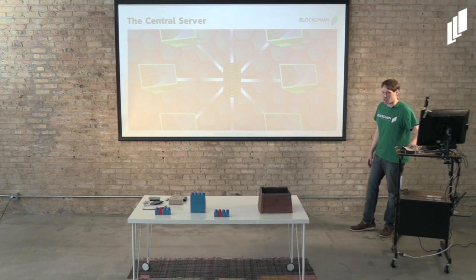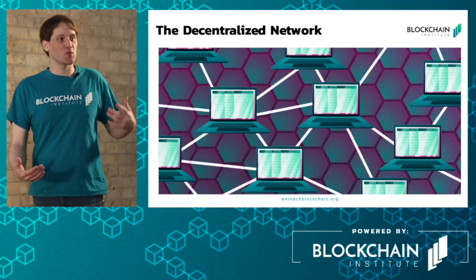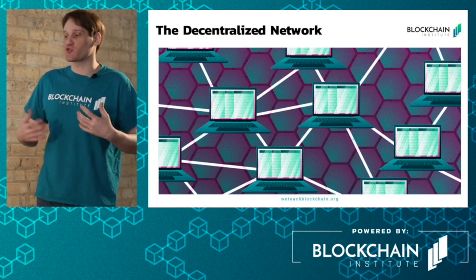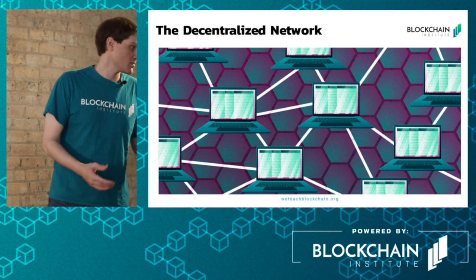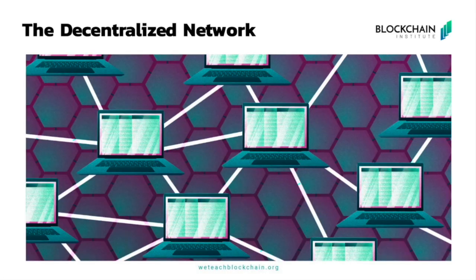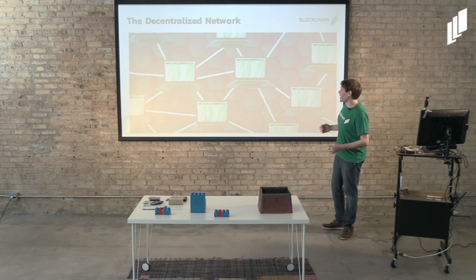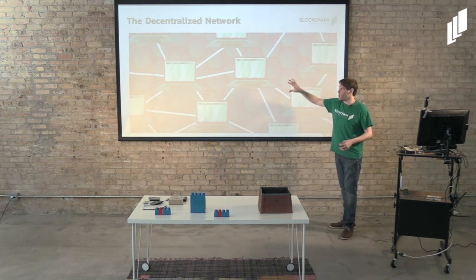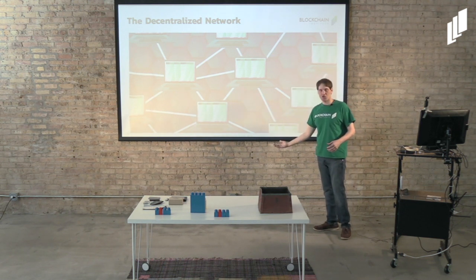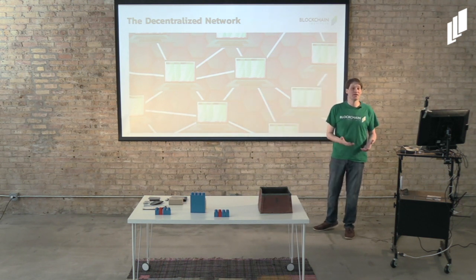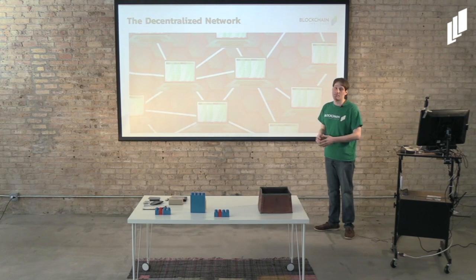Let me introduce decentralized networks. This is a direct response to these central points of failure that could ultimately compromise your data integrity. A decentralized network has a completely different layout — it's more of a web. There's no reliance on a central server, which can be a target for hacks. Instead, it's made up of members of the network who each have a copy of all the transaction data, so everybody knows who has what at any given time.